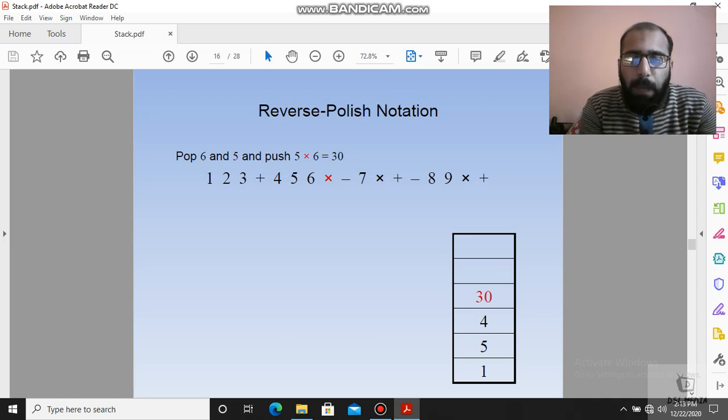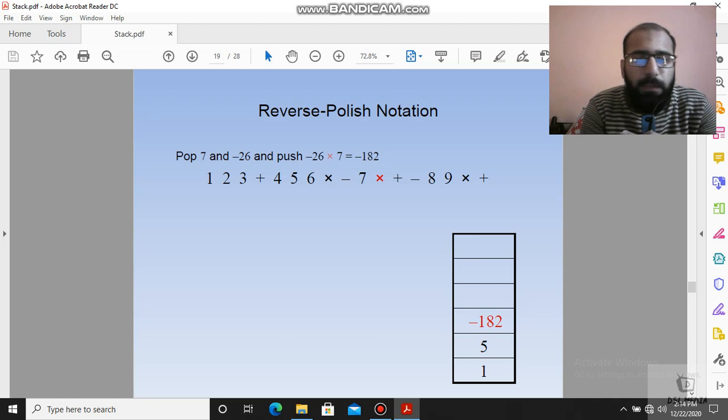Now after the multiply operation we have a minus sign, that means 4 minus 30, which equals minus 26. So we have minus 26. After that we have 7, which is inserted, then a multiply sign again comes: minus 26 multiply by 7, that is equal to minus 182. After that, after minus 182, we have a plus sign. Plus sign means 5 plus minus 182.